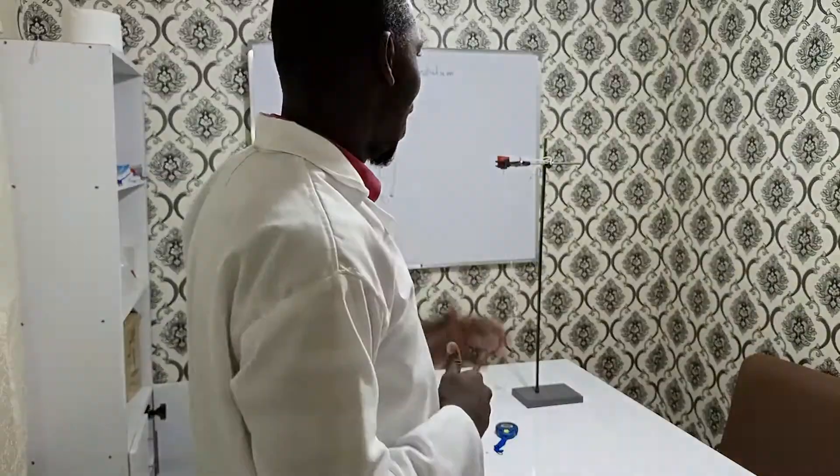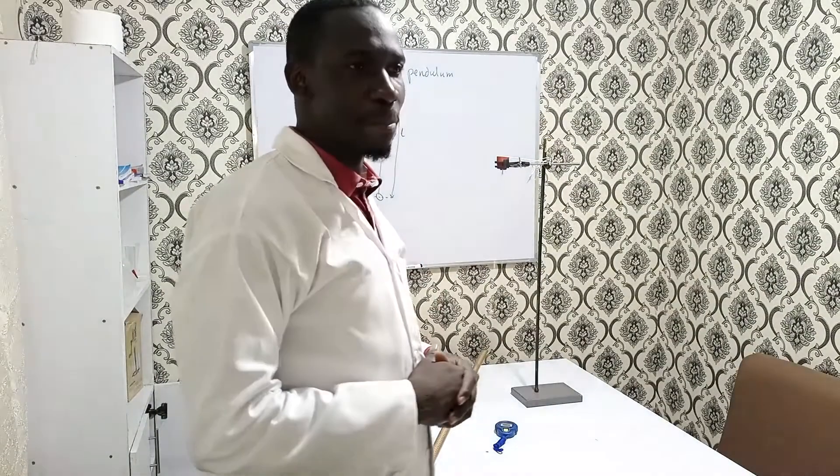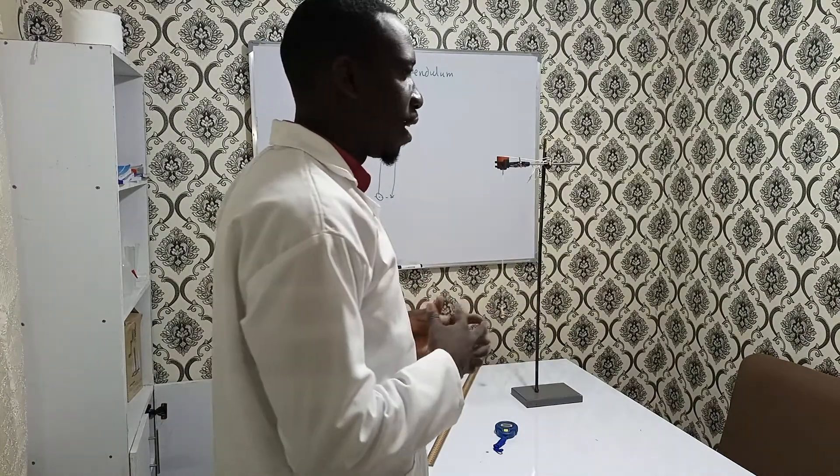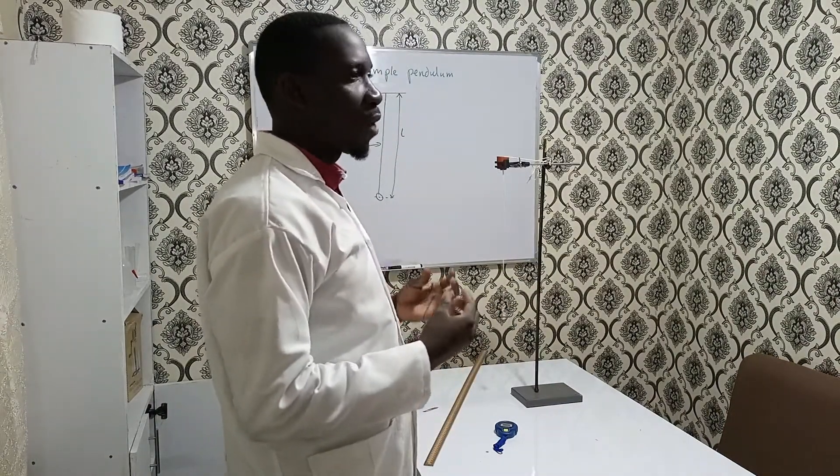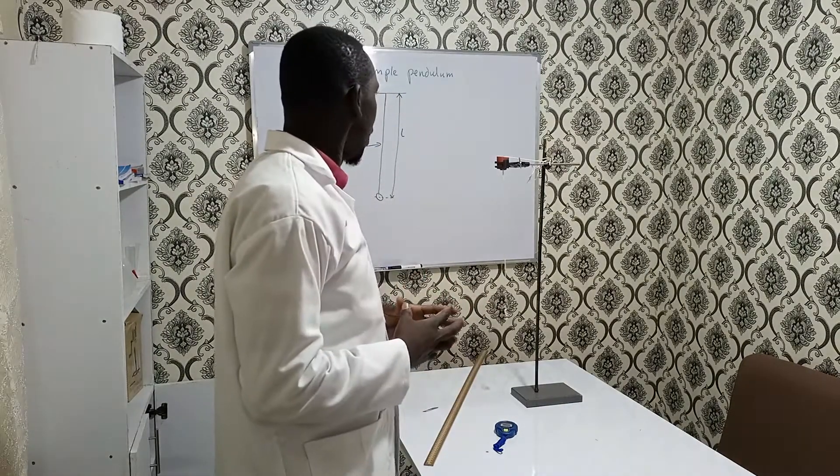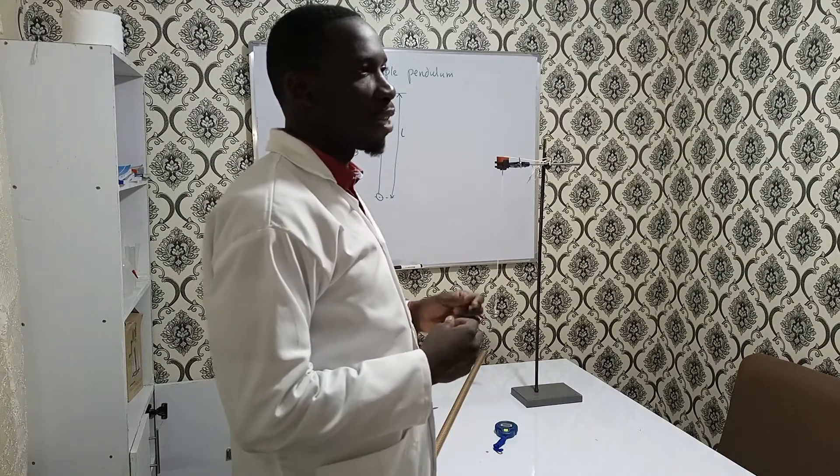Welcome guys, today I want to show you how to use a simple pendulum in an experiment. Remember, we can use a simple pendulum to produce oscillations, and from there we can work out the time period. We have the length, so we can work out the acceleration due to gravity.